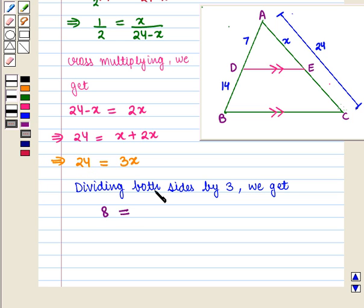Now dividing both sides by 3, we get 24/3, that is 8, equals x. Or we can write x equals 8.